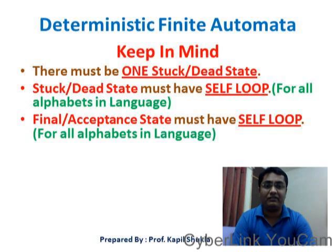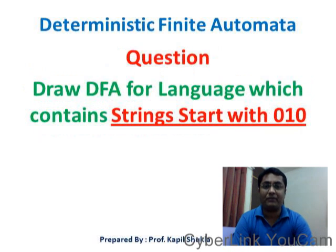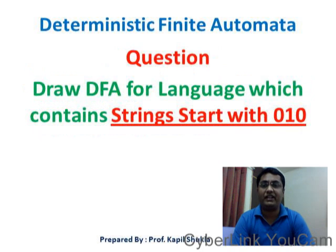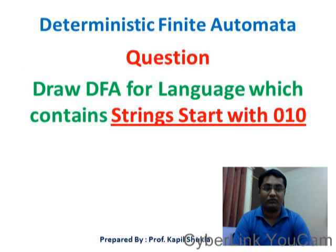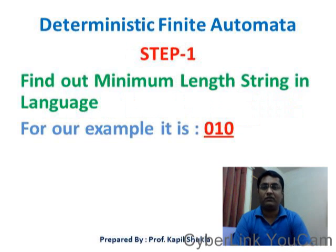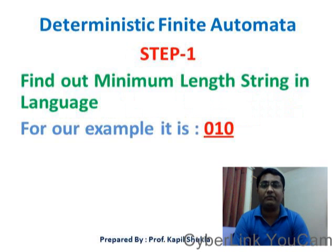Now let's have one example. The question is: draw a DFA for a language which contains strings starting with 010. Step 1: find out the minimum length string in the language. For our language, the minimum length string is 010.